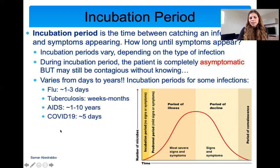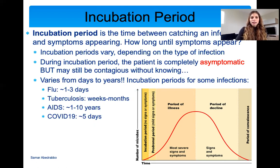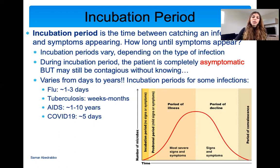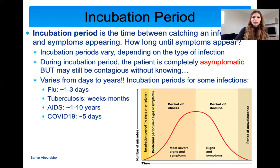For example, the flu has an incubation period of one to three days. If you encounter the influenza virus, it'll take you about one to three days to show symptoms. With tuberculosis, which is a bad lung infection, it takes weeks or even months — you may not show symptoms for a month, but you still carry the bacteria. And with AIDS, it's one to ten years: from the moment you get HIV until you show symptoms of AIDS, it takes a very long time.